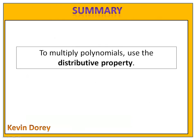Here's what you need to know: if you want to multiply two polynomials, all you really have to do is use the distributive property. Sometimes you have to use the distributive property multiple times, but it's easy to work with and it's everything you need to know.